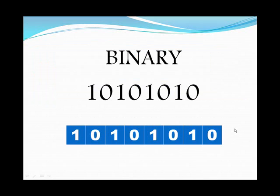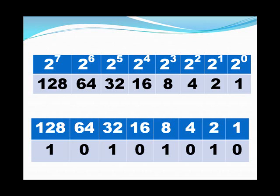It's not much different in binary. The only difference is instead of using 0 through 9, we only use 1s and 0s. Since we're using two numbers, we have 2 to the 0 — anything to the zero power is 1. Then 2 to the 1st is 2, 2 squared is 4, 2 cubed is 8, 2 to the 4th is 16, 2 to the 5th is 32, 2 to the 6th is 64, and 2 to the 7th is 128.